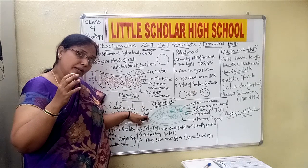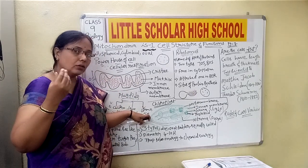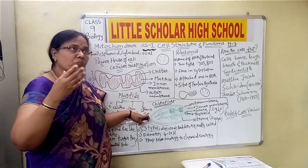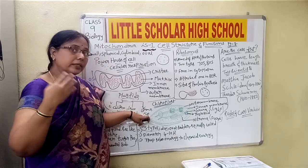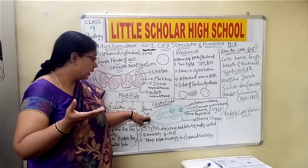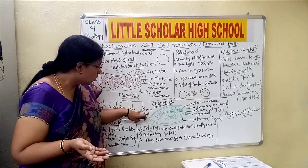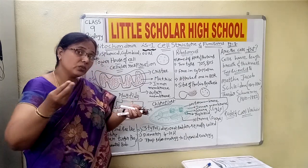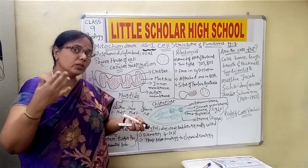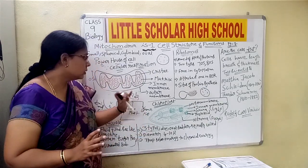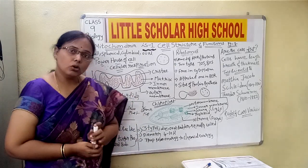Certain plants appear purple, yellow, or orange in color. This is because of colored pigments like carotene and xanthophyll. The reddish or orangish color appears because of chromoplasts, which contain the colored pigments that give different colors to the plants.